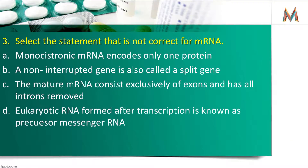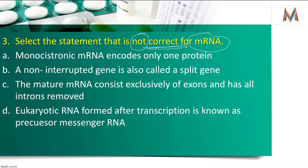अगला question बहुत ही ज़्यादा conceptual है — information के साथ। पहले 'NOT' को underline कर लो। NOT correct का मतलब गलत option ढूंढना है। यह question messenger RNA से related है। हर एक अलग-अलग statement दिया है। Eukaryotes में जो mature RNA होते हैं — उनके RNA में ऐसे sequences होते हैं जो code नहीं कर पाएंगे।